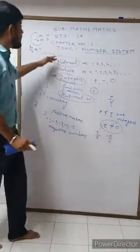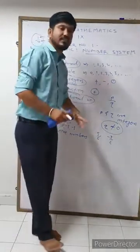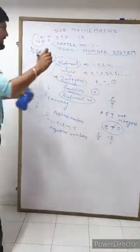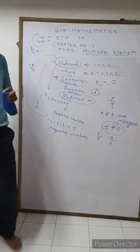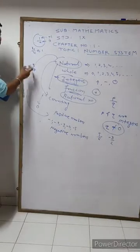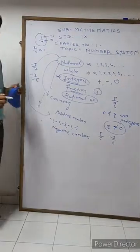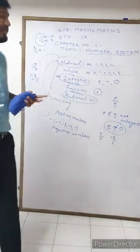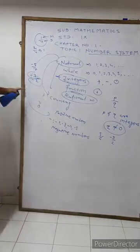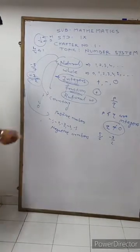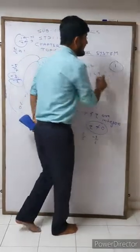All natural numbers, whole numbers, integers, and fractions are together known as rational numbers. For example, minus five by seven is rational because minus five and seven are both integers. Minus three by minus two is also rational because minus three and minus two are both integers and minus two is not equal to zero.